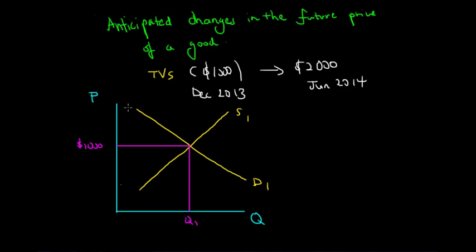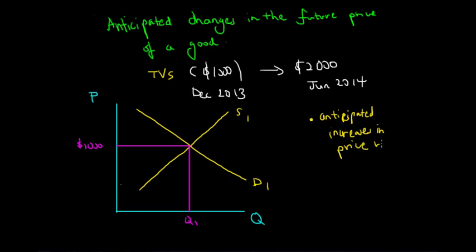Because we can see that in the future the price of a TV will increase to $2,000, people would tend to buy more. So an anticipated increase in price would lead to more purchases currently.